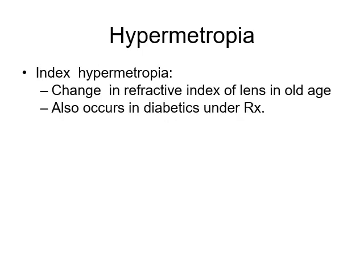For your viva, the examiner can ask about shortening of 1 mm. Your answer will be: shortening of 1 mm axial length causes 3 diopters of hypermetropia, and 1 mm increase in radius of curvature causes 6 diopters of hypermetropia.